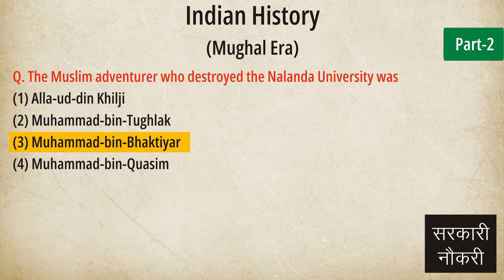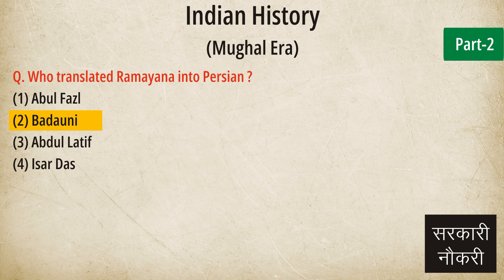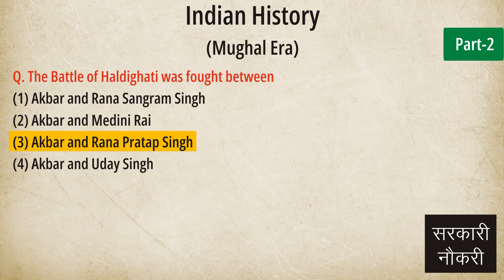Question: The Muslim adventurer who destroyed the Nalanda University was. Answer: Muhammad bin Bakhtiyar. Question: Painting reached its highest level of development during the reign of. Answer: Jahangir. Question: Who translated Ramayana into Persian? Answer: Badauni. Question: The Battle of Haldighati was fought between. Answer: Akbar and Rana Pratap Singh.